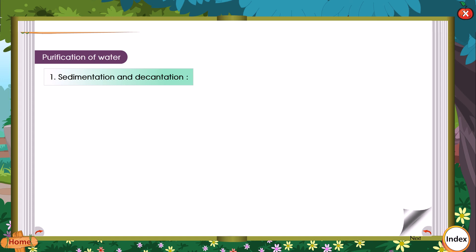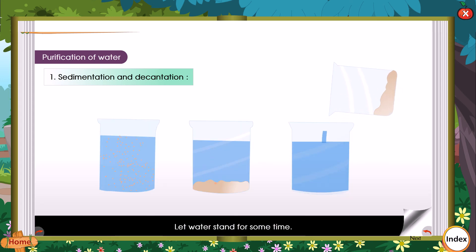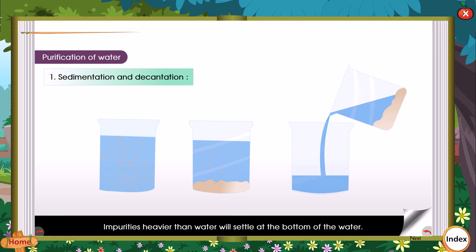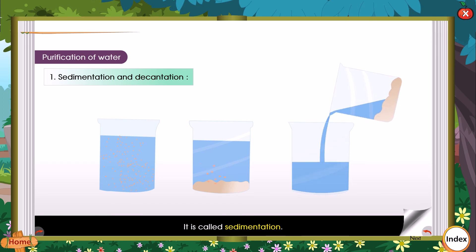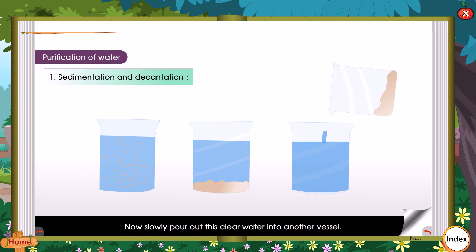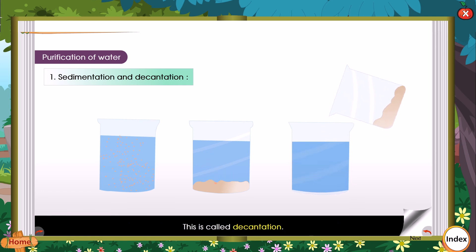Let water stand for some time. Impurities heavier than water will settle at the bottom — this is called sedimentation. Now slowly pour out this clear water into another vessel. This is called decantation.